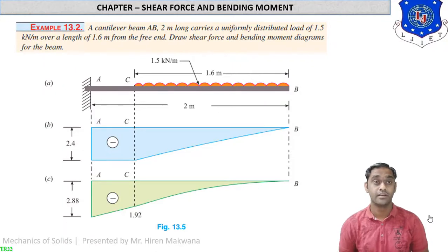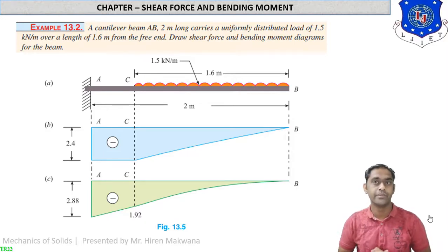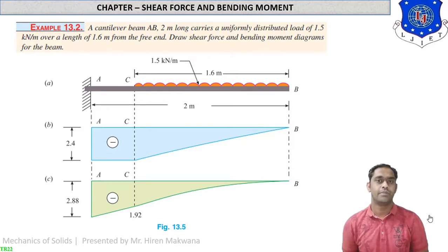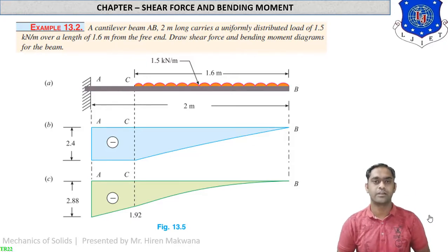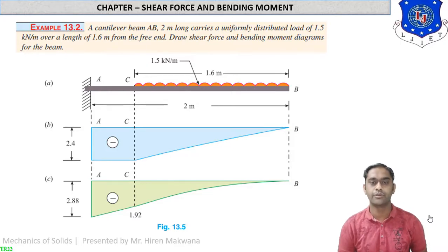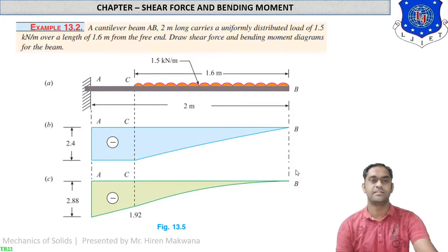Hello and welcome students. Today we are going to discuss two more numericals regarding shear force and bending moment. In yesterday's lecture we discussed one numerical of a cantilever beam subjected to two point loads only. In that case there was no UDL, but in this figure there is a cantilever beam subjected to UDL on 1.6 meter length and the value of UDL is 1.5 kN per meter. Now when UDL comes into the picture, let us discuss how things change.